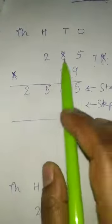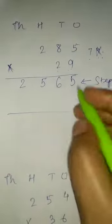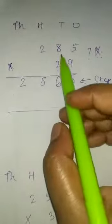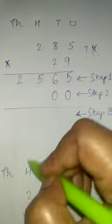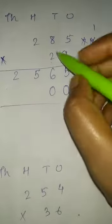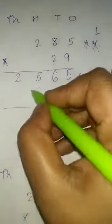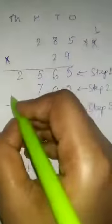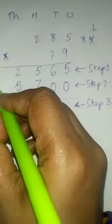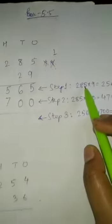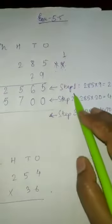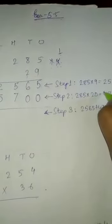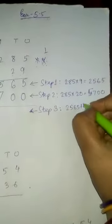Now we will multiply with 20. Why 20? Because 2 is written in the tens place. So first we put 0 here. Then we multiply: 2 fives are 10 — write 0, carry 1. 2 eights are 16, plus 1 is 17 — write 7, carry 1. 2 twos are 4, plus 1 is 5. So 285 multiplied by 20 gives us 5700.